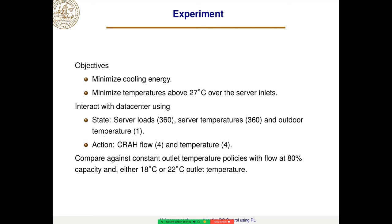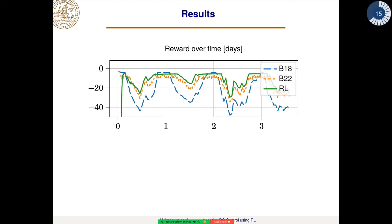We compare this against constant outlet temperature policies with fan flow at 80% of capacity. The outlet is set to either 18 or 22 degrees Celsius. We can see that the reinforcement learning agent — shown in green — is at least slightly better than the orange policy most of the time, and a bit better than the blue policy most of the time, giving a slight performance advantage.